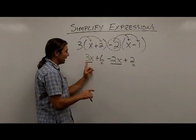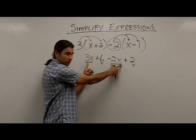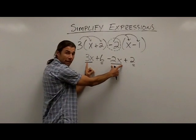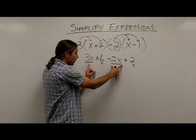So let's start with the x terms. I have a positive 3x plus a negative 2x. Well, if I add a positive 3x plus a negative 2x, that's going to leave me with 1x.